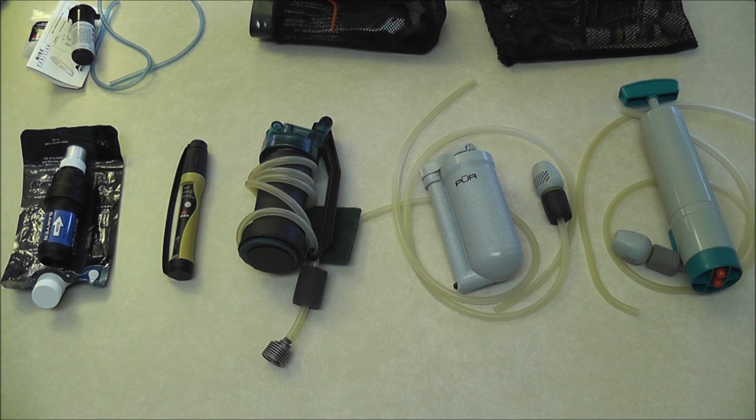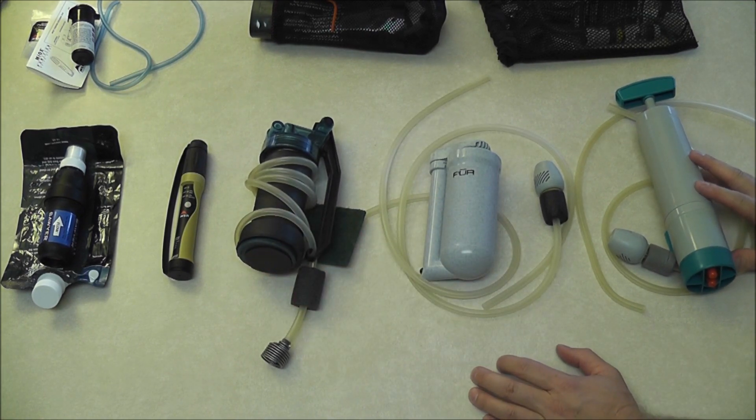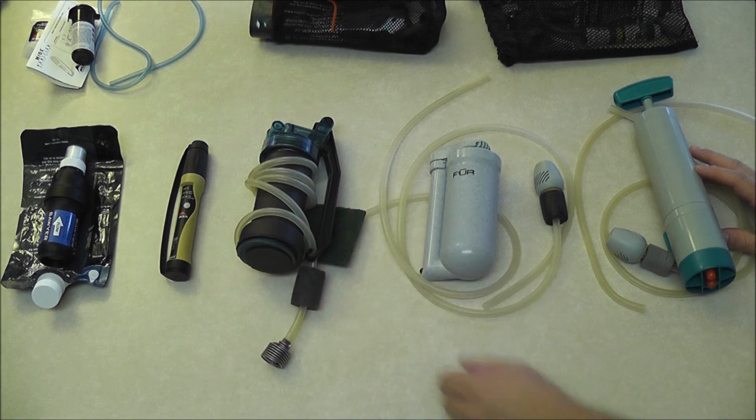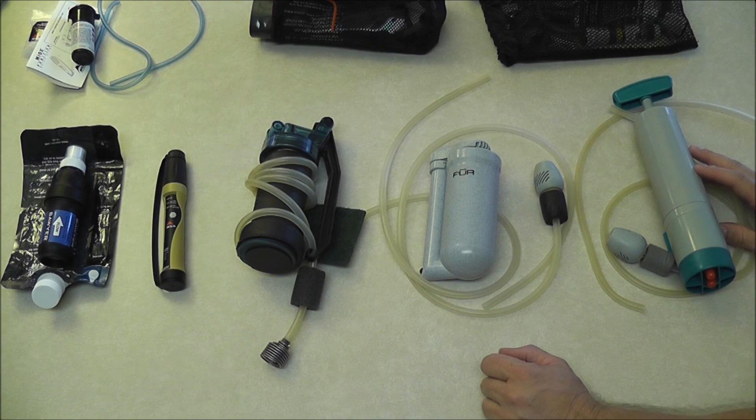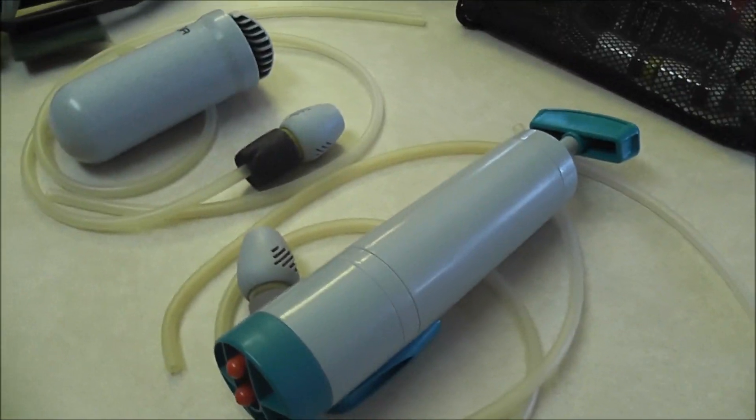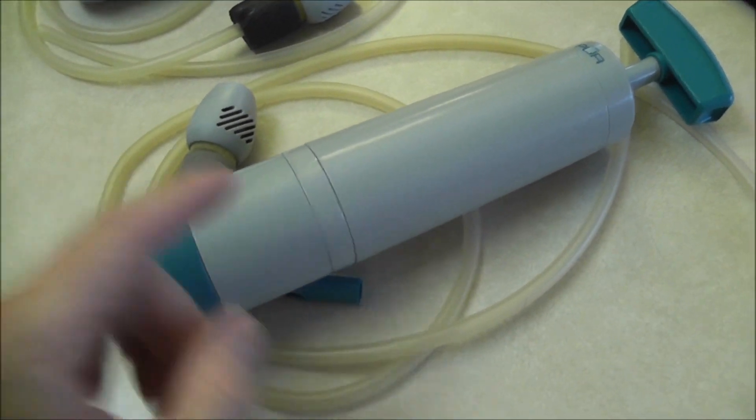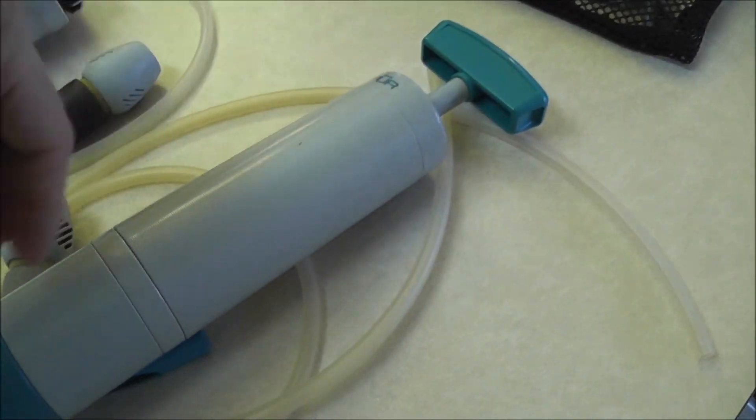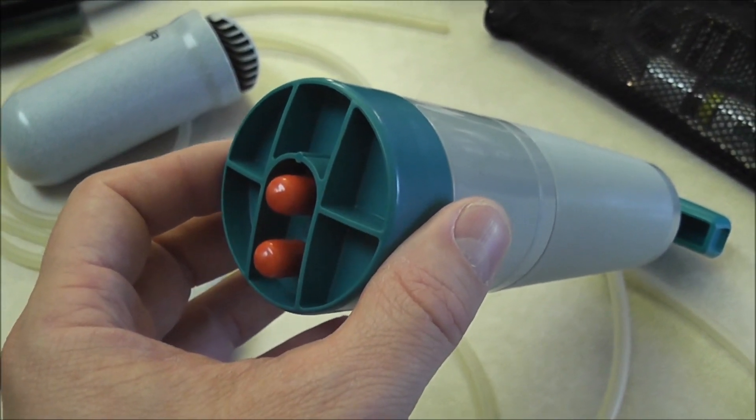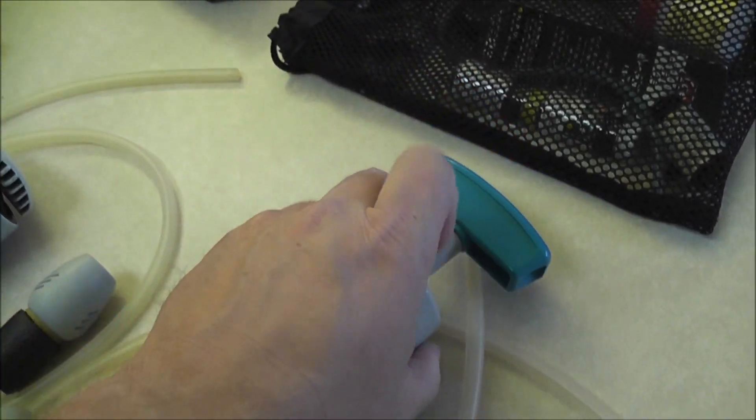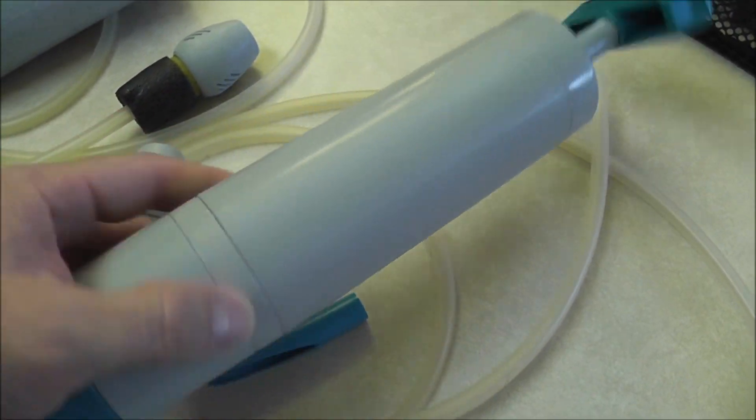All of these systems deal with bacteria and protozoa very effectively by removing them. It's notoriously difficult to kill cysts like cryptosporidium with chemical treatments, although MSR Myox works well. Over here on the far right is the Pure Scout. This lower section screws onto the main body, making it about eleven and a half inches long from the T-handle to the base.